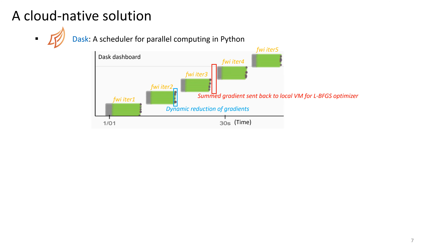Dask is a scheduler for parallel computing written in Python. It submits FWI gradient jobs to the Kubernetes cluster and then collects and sums the returned gradients of all shots. In this example, the Dask dashboard shows five FWI iterations. Each green line corresponds to the progress of a worker or a shot. The gap indicates the pause of all workers while the summed gradient is sent back to the local VM for LBFGS optimization. The dots show the dynamic reduction of a FWI gradient when implemented, which is an important feature for running FWI on cloud efficiently.